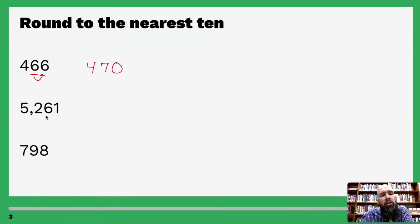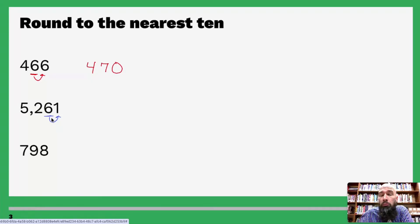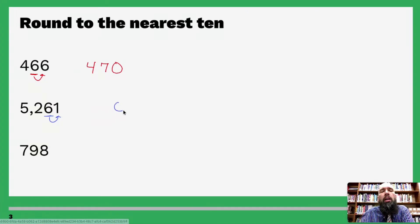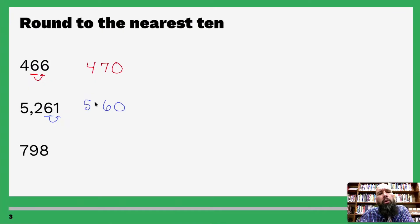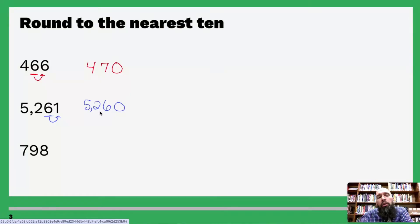Round to the nearest ten again. We look to the right of it — four or below, let it go — yes! Turn the one into zero, leave six alone, and then five and two just come along for the ride. So this rounds down to five thousand two hundred and sixty.